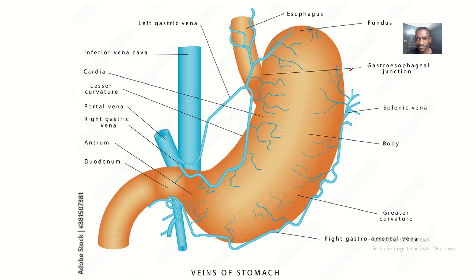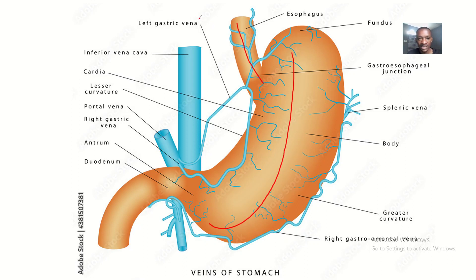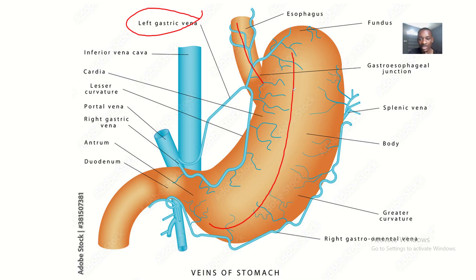Looking at this picture, you can see the stomach, and the part of the esophagus joining with it — that's the abdominal esophagus, the last or lowest part. You can see it has venous drainage: one is the left gastric vein and the other is the esophageal branch of the azygous vein or the hemi-azygous vein. These are the two veins draining the abdominal esophagus before it joins the stomach at the cardia.